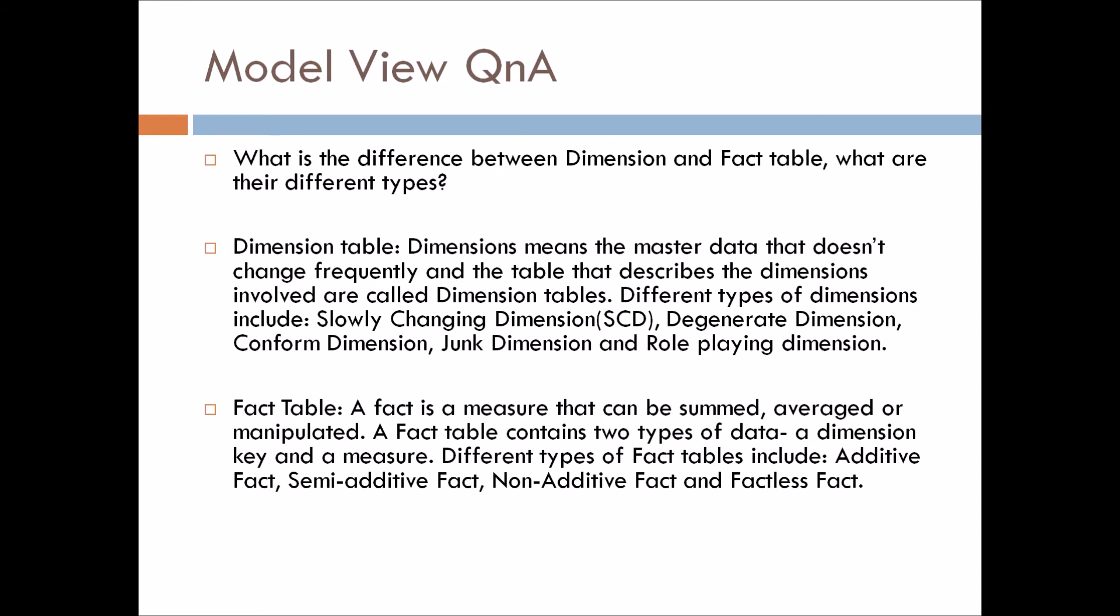Now what is fact table? A fact is a measure that can be summed, averaged or manipulated. A fact table contains two types of data: a dimension key and a measure. Dimension keys are the ones with which these fact tables are connected to the dimension tables. And a measure means transaction data. So fact table basically comprises of the dimension keys as well as the transaction data that is measured.